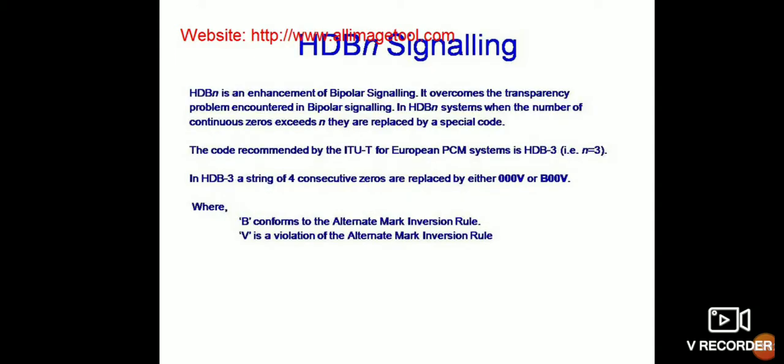HDB3 signaling: HDB3 is an enhancement of bipolar signaling. It overcomes the transparency problem encountered in bipolar signaling. In HDB3 systems, when the number of continuous zeros exceeds a threshold, they are replaced by a special code. The code is recommended by the International Telecommunication Union for the European Pulse Code Modulation system — HDB3.